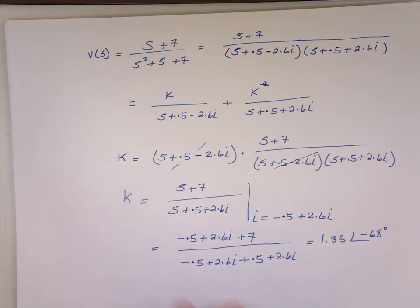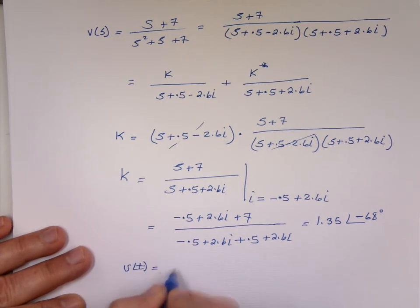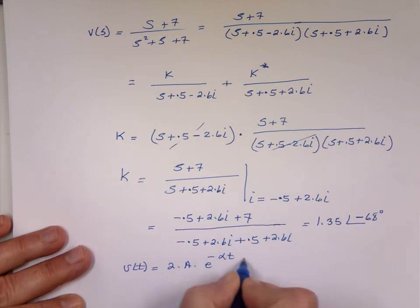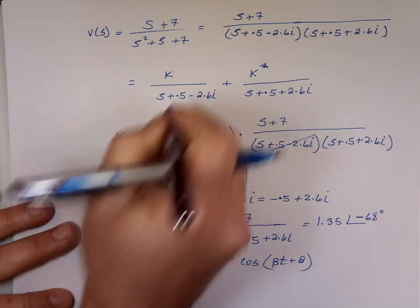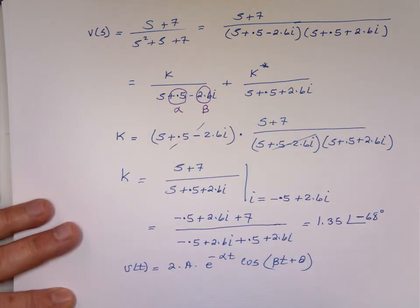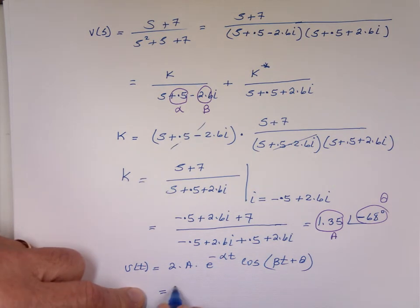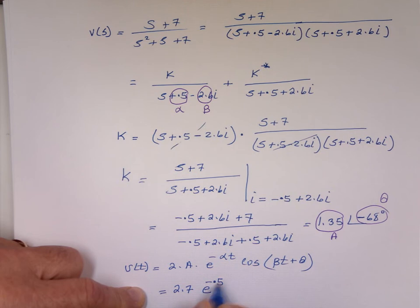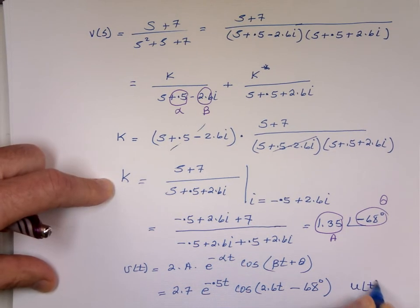So if that's my answer and I did all the right stuff — this is your A and that's your theta. So V as a function of time is going to be 2 times A, e to the minus alpha·t, cosine(beta·t plus theta). This is my alpha — 0.5. This is my beta — 2.6. This is my A — 1.35, and this is my theta — negative 68 degrees. So it's 2 times 1.35, that's 2.7, e to the minus 0.5t, cosine(2.6t minus 68 degrees), u(t). And that's the end of it.